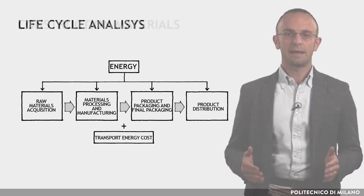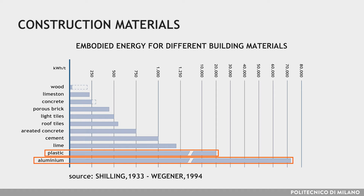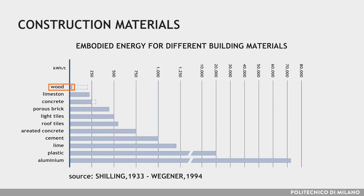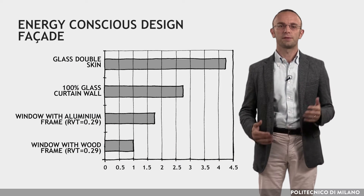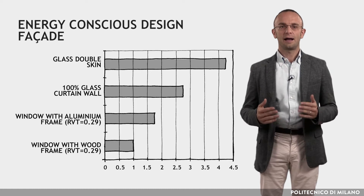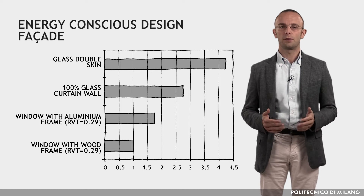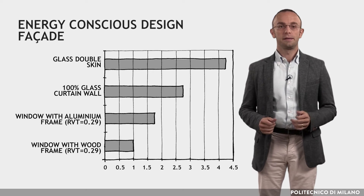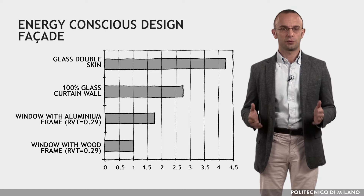Considering the embodied energy of different construction materials, it is possible to note that aluminum or plastic have much higher values than those of wood and concrete. The choice of materials and components becomes increasingly important in energy conscious design, and this has a great impact on the architectural choices related to the envelope, in particular due to the high embodied energies of glass. In the figure, relative values of embodied energy in some types of façades is shown.